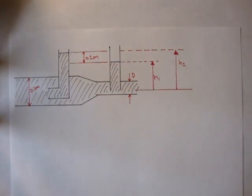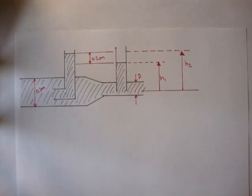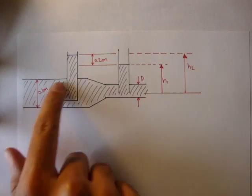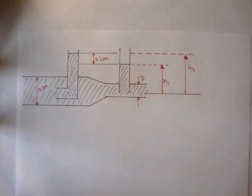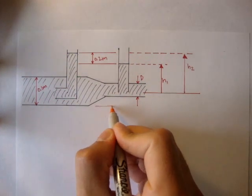All right, let's do another Bernoulli equation example. Here we have a tube filled with water, and it's flowing this way, so the flow is this way.